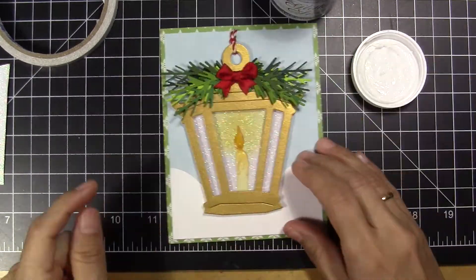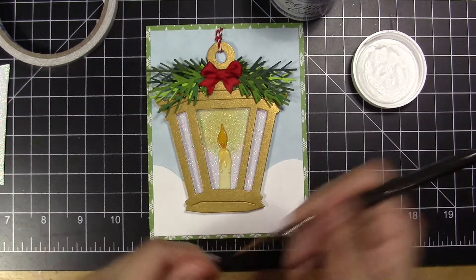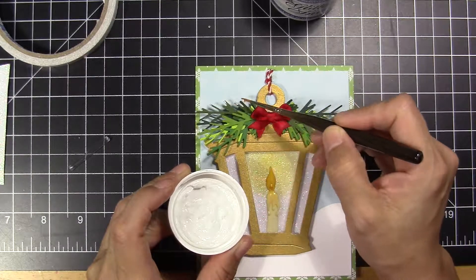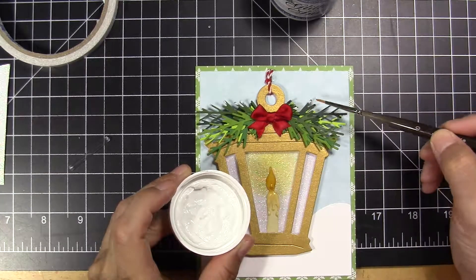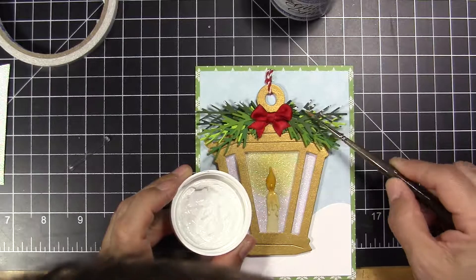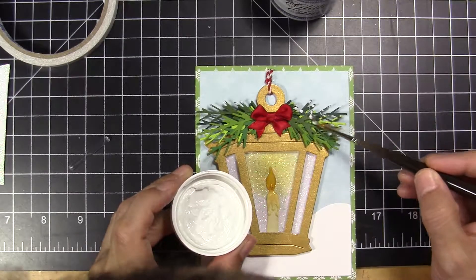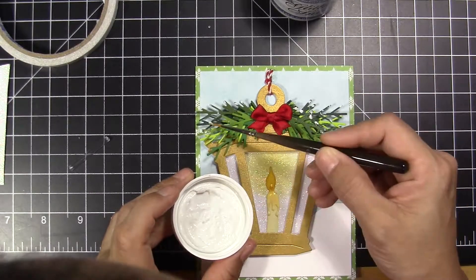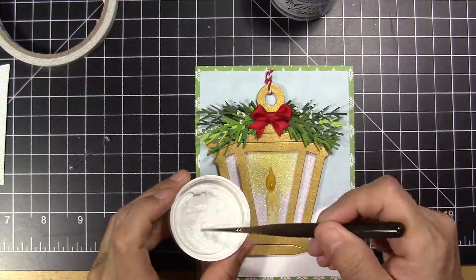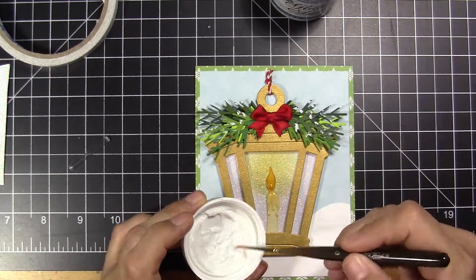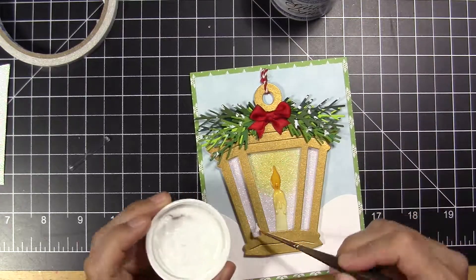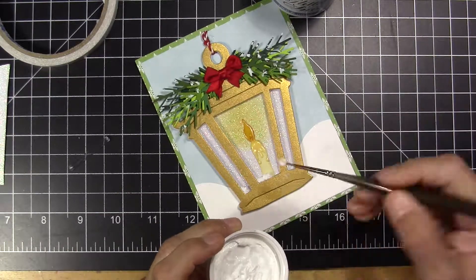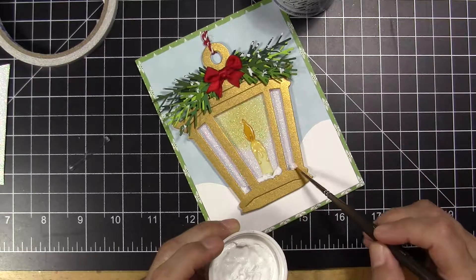Now I'm going to add the snow glitter on the evergreen and on the bow, on the acetate, in several parts where the snow should be after it snows a little bit. It's not perfect, but it's what I have in my mind. I'm going to add even a little bit on the top of the hanger where the loop is, where the lamp is supposed to be hanging.